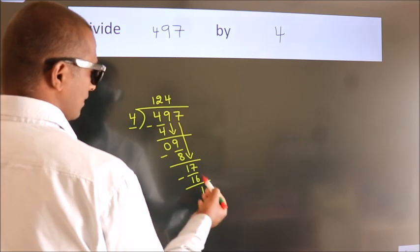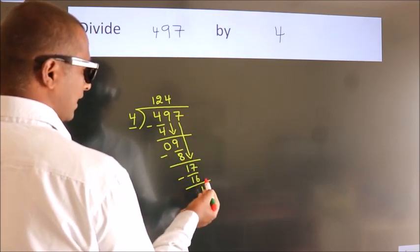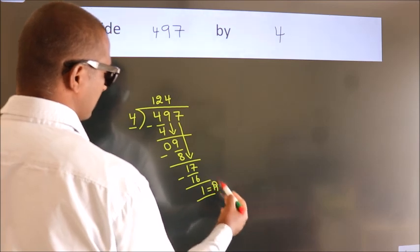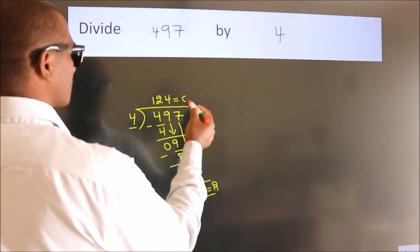After this, no more numbers to bring down. So we stop here. This is our remainder. This is our quotient.